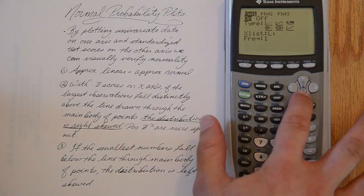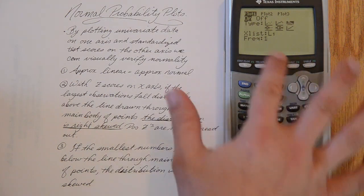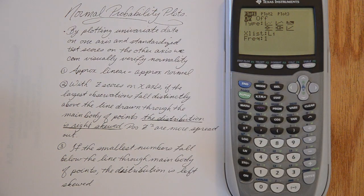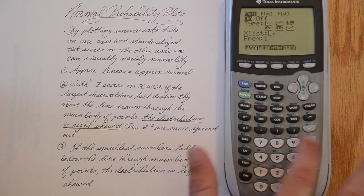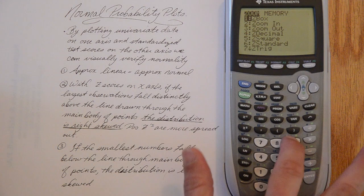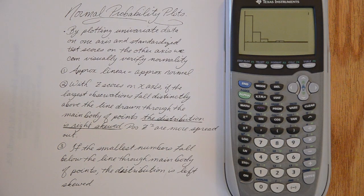I am going to choose histogram, which is already selected. And my data is in list one. Zoom, nine. Okay, clear it again. Zoom, nine.